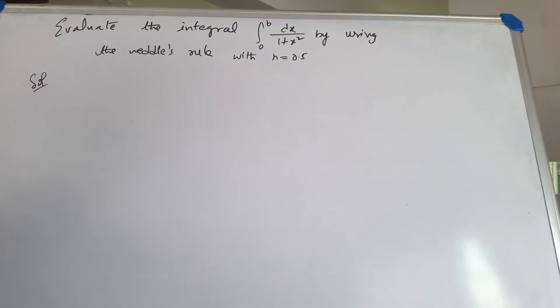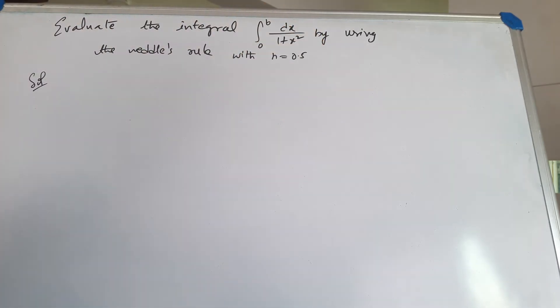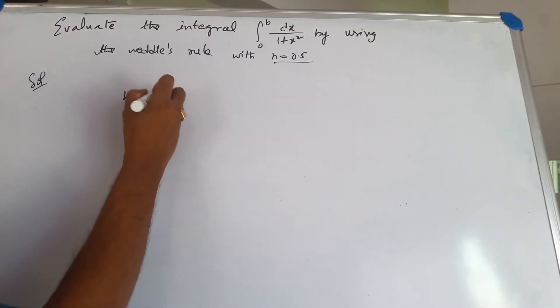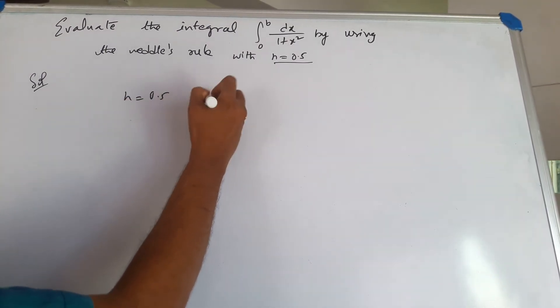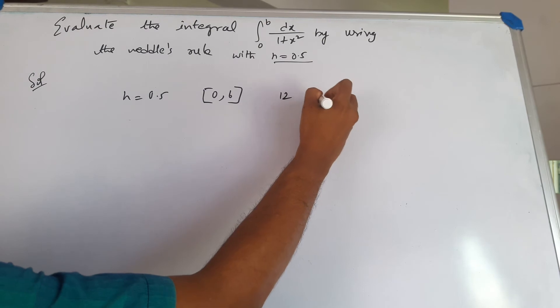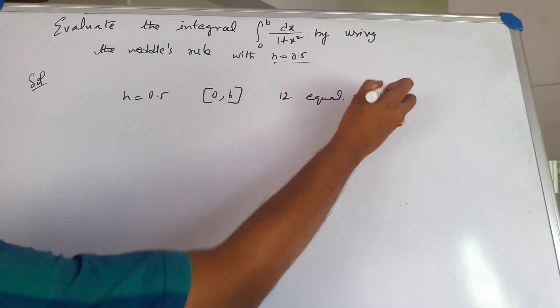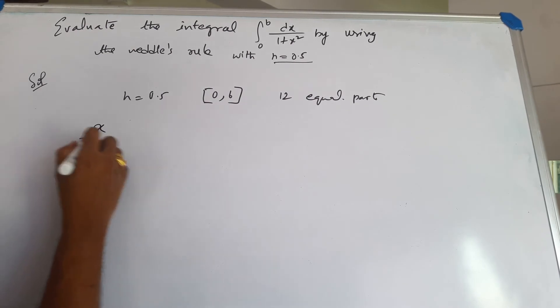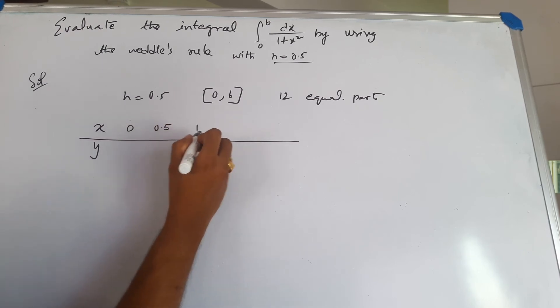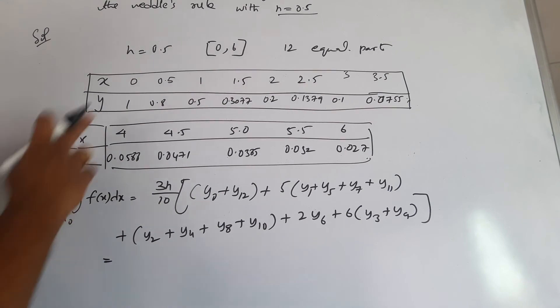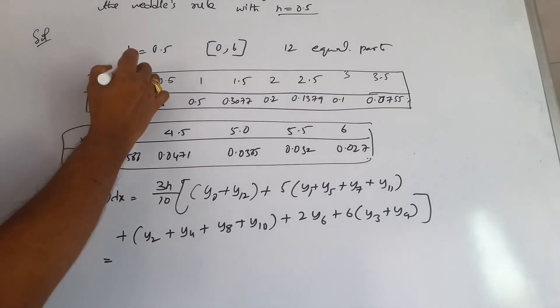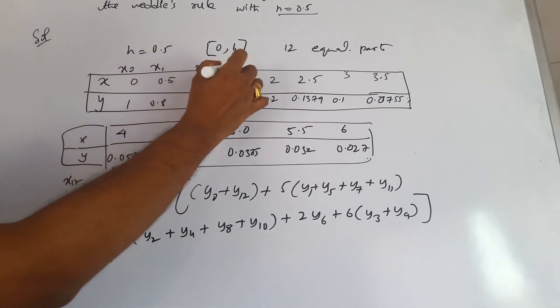Let us evaluate the integral 0 to 6 of dx by 1 plus x squared by using Weddle's rule. H is given as 0.5, so over the interval 0 to 6, we will get 12 equal parts. X and y: this is 0, 0.5, 1, and so on. Now the x values when I substitute for x as 0, that is x0, x1, x2, and so on.